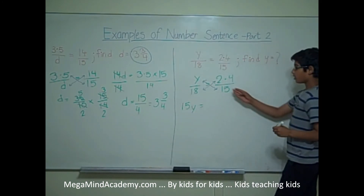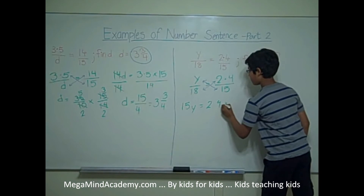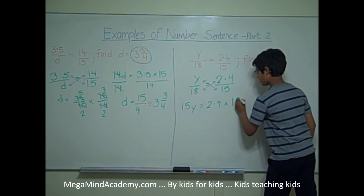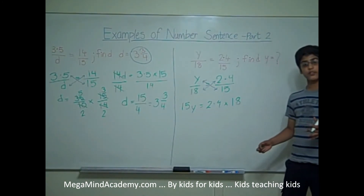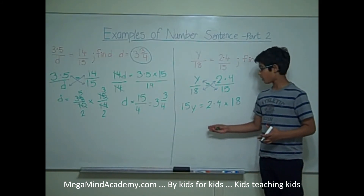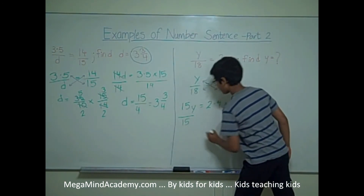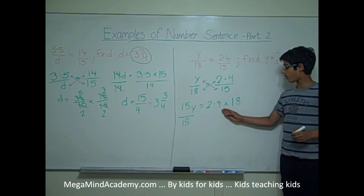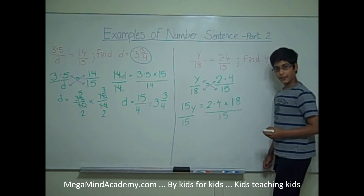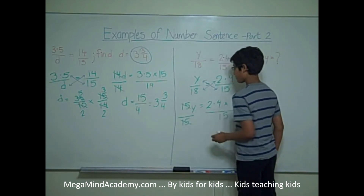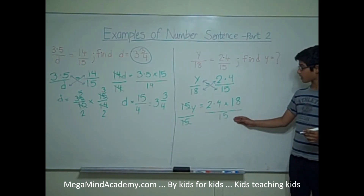So, 15y is equal to 2.4 times 18. Now, we need to find out how much y is equal to, so we have to divide both sides of the equation by 15. So, 15y over 15 is equal to 2.4 times 18 over 15. The 15 cancels out with the 15, so y is equal to 2.4 times 18 over 15.